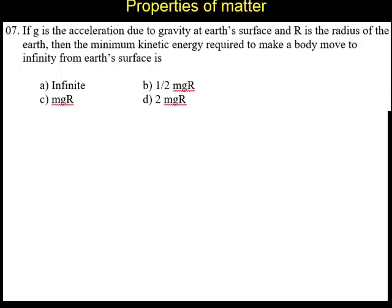Question number 7. If g is the acceleration due to gravity at the Earth's surface and R is the radius of the Earth, then the minimum kinetic energy required to make a body move to infinity from the Earth's surface is...